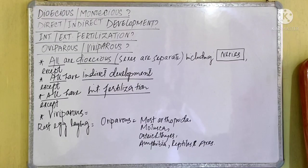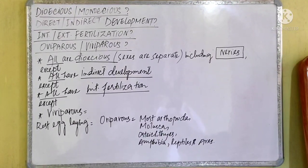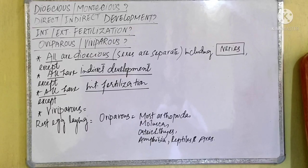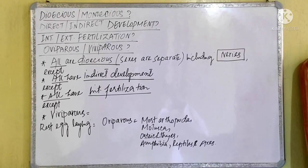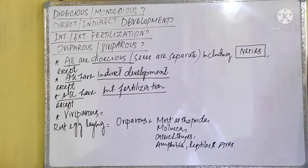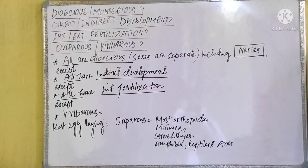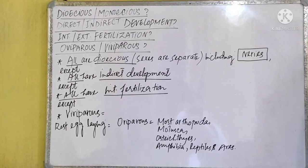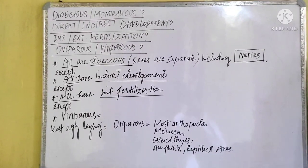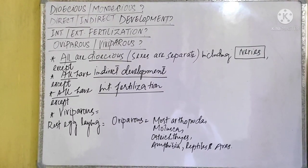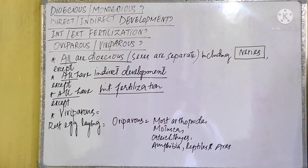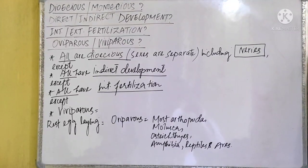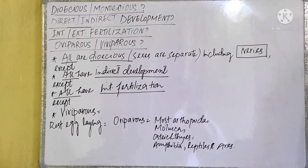As you will be seeing here, we have to remember which animals are dioecious, which are monoecious, which have direct development, which have indirect development, which have internal fertilization, which have external fertilization, and which are oviparous or viviparous. All animals are dioecious — meaning the sexes are separate, male and female are not in the same organism — except for the exceptions I will mention. You only need to remember the exceptions written in green.